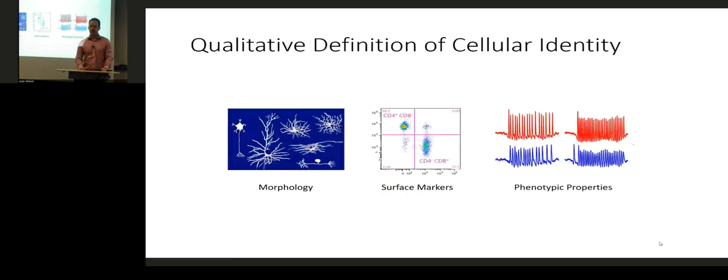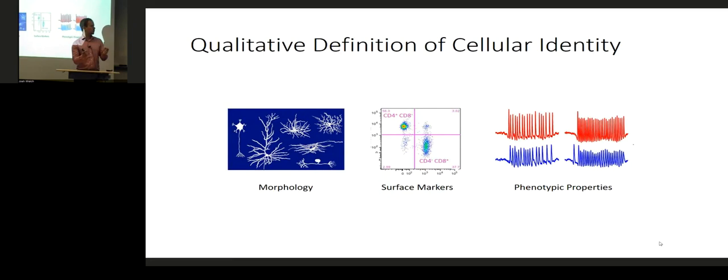The overall problem that we're interested in solving with this algorithm is moving from a qualitative definition of cellular identity — which is the traditional way biologists think about cell identity — to a quantitative definition. Qualitative definition of cell types has traditionally been based on things like morphology: how does the cell look under the microscope? We can see that there are clearly different cell shapes, and these are likely different cell types.